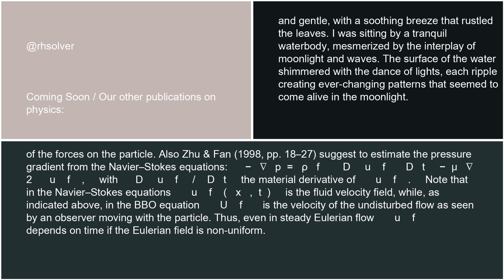Note that in the Navier-Stokes equations u_f(x,t) is the fluid velocity field, while, as indicated above, in the BBO equation u_f is the velocity of the undisturbed flow as seen by an observer moving with the particle. Thus, even in steady Eulerian flow u_f depends on time if the Eulerian field is non-uniform.